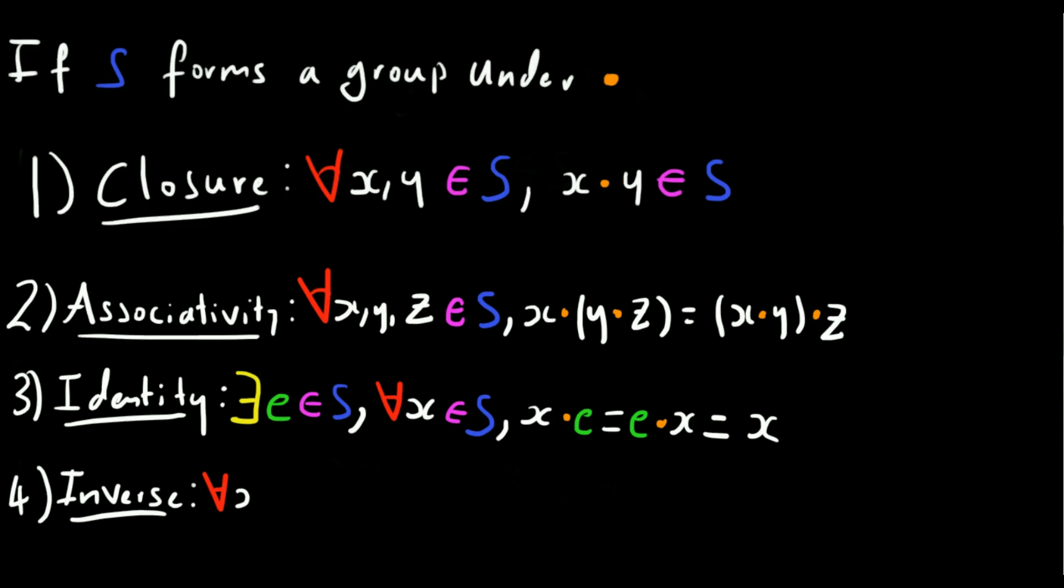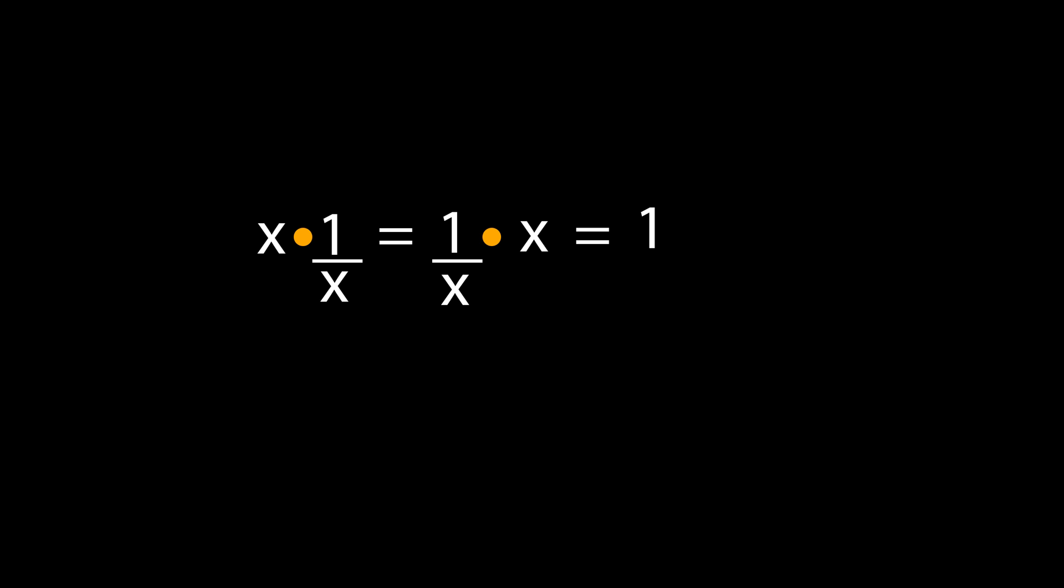And finally, we come to the fourth axiom, which is the existence of inverses. This states that for every element in the set, there exists another element in the set, such that combining them in either order produces the identity element. So this is kind of like how 1 over X is the multiplicative inverse of X. X times 1 over X equals 1, which is the multiplicative identity. But of course, the reach of binary operations in group theory, as we'll shortly see, extends far beyond just simple multiplication and addition. So really, the idea of an inverse is quite general.